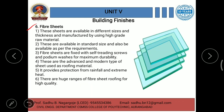The last type is fiber sheets. These sheets are available in different sizes and thicknesses and manufactured using high-grade raw material. They are also available in standard sizes or as per requirements. Fiber sheets are fixed with self-tapping screws and podium washers for maximum durability. These are the advanced and modern type of sheet used as roofing material, providing protection from rainfall and extreme heat. There is a huge range of fiber sheet roofing for high quality.